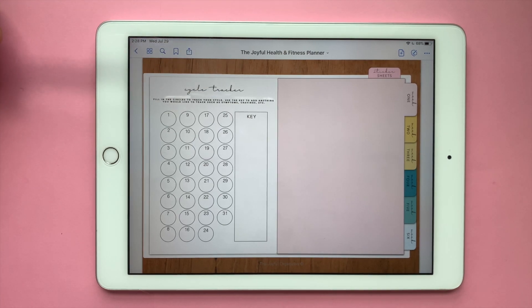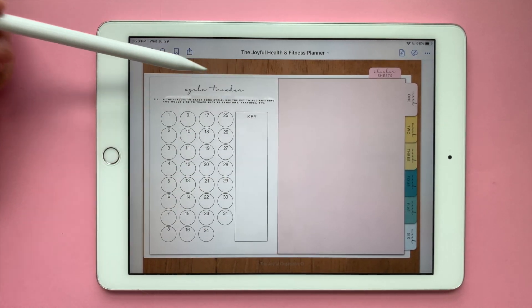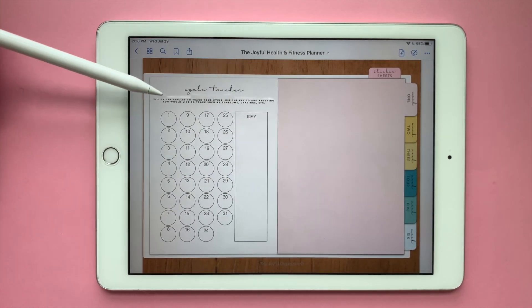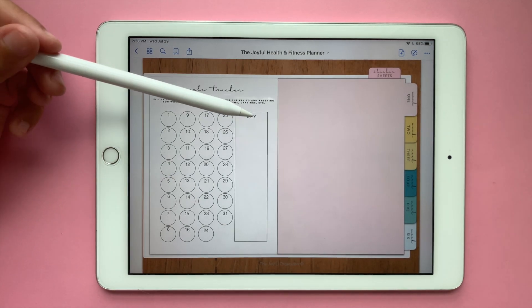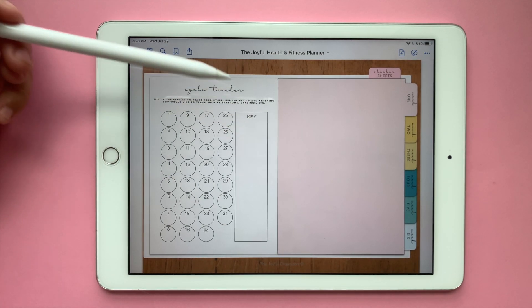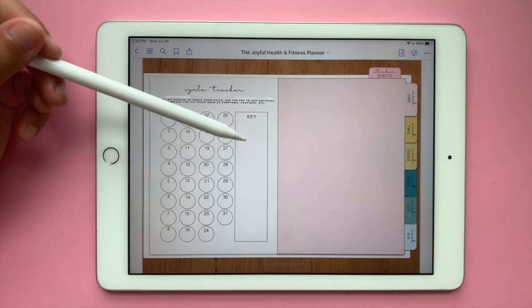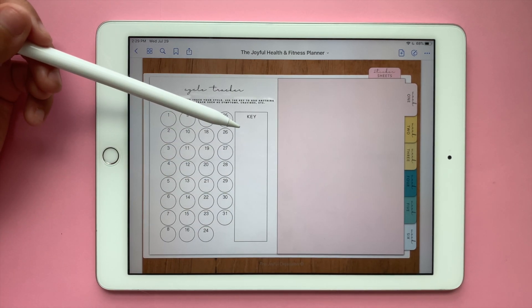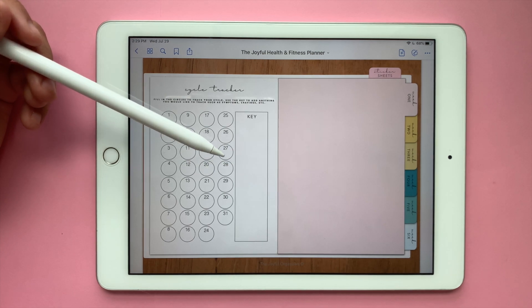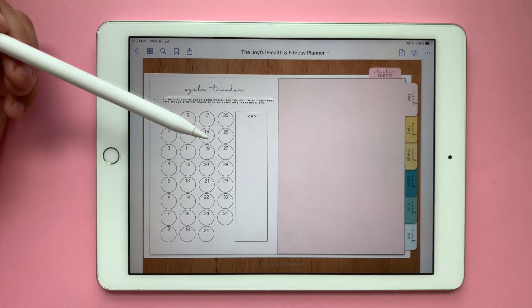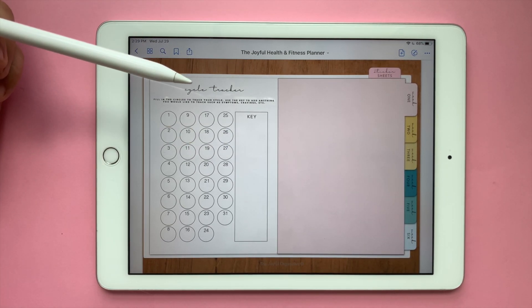Next we have the cycle tracker. If that is something that you would like to track, I made this tracker so that you can be as freely and creative as you want. You can use this key to either add days you're ovulating, days that you're tracking, your symptoms, or anything you want to track for your cycle.